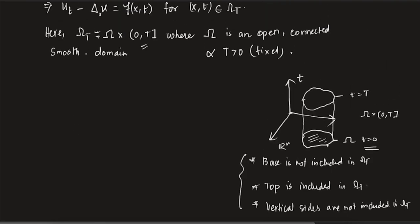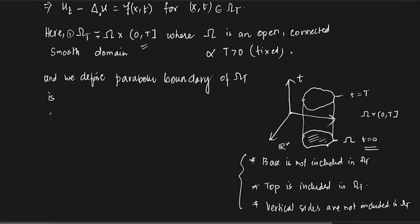We now define the parabolic boundary, denoted del_p(omega_T) or gamma_T. It is defined as omega_T bar minus omega_T — you take the closure of omega_T and remove omega_T itself. The parabolic boundary consists of the bottom and the vertical sides of omega cross [0, T], but not the top.